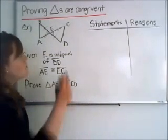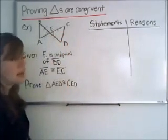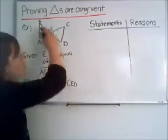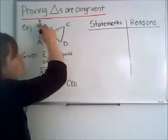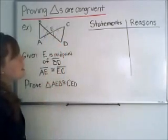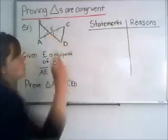Because notice what we have is we have two sides, two corresponding sides are congruent. So we have EC and AE, and the corresponding sides BE and ED. And then in between them, what those two sides make up, those angles are congruent as well.